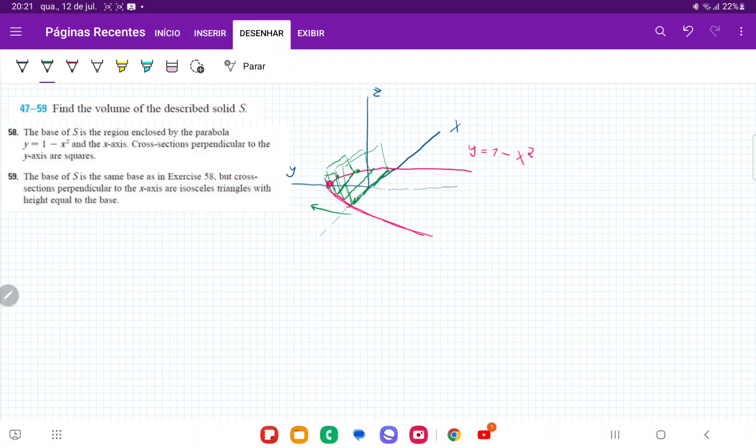So our integral is going to be the integral from 0 to 1 of A of y, dy, where we're integrating the area of each of these squares all the way up from 0 to 1 across the y-axis.